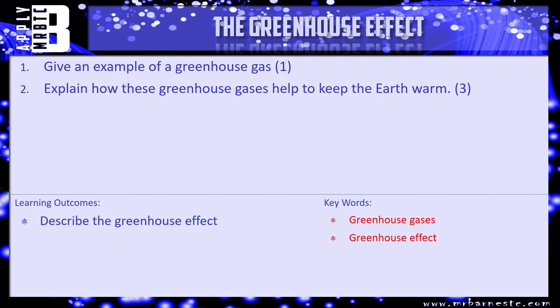I've got two questions on this for you. Number one, give me an example of a greenhouse gas — there are three main ones we talked about, name one of them. And then explain how these greenhouse gases help to keep the earth warm. Pause the video, have a go, and we'll see what you've picked up in a minute.